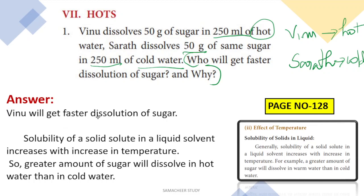Vinu will get faster dissolution of sugar. The solubility of a solid solute in a liquid solvent increases with increase in temperature. So as temperature increases, solubility increases. Therefore, a greater amount of sugar will dissolve in hot water than in cold water.